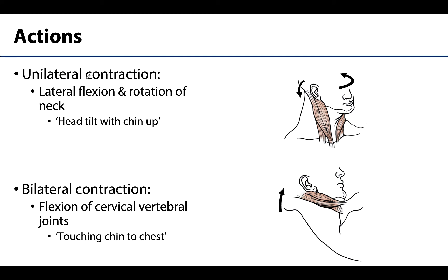Let's talk about what this muscle can do when it contracts. An important concept is that a muscle must cross a joint to directly affect actions at that joint. Looking at where this muscle is located, based on its attachments it crosses between the skull and the sternum and clavicle, crossing all the cervical vertebrae as well as the atlanto-occipital joint. What this muscle can do depends on whether one SCM is contracting — unilateral contraction — or both are contracting simultaneously — bilateral contraction.